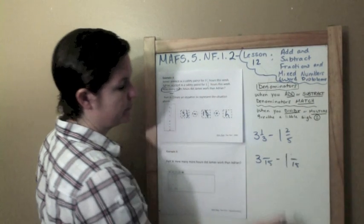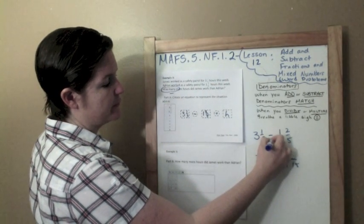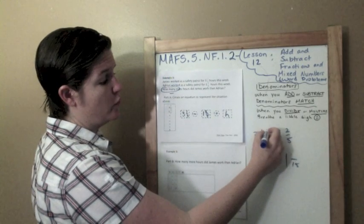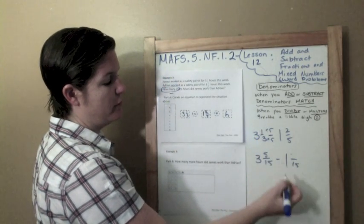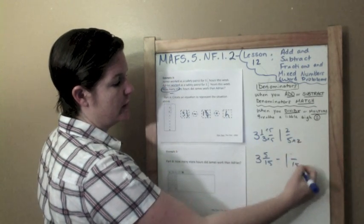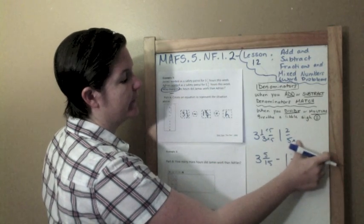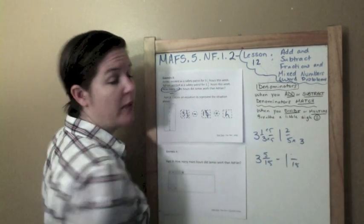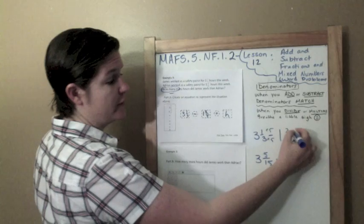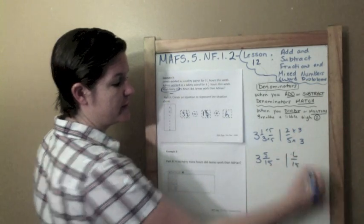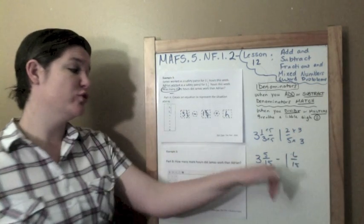Let me write it over here. 3 and 1/3 minus 1 and 2/5. Do my denominators match? Nope. But I need to make them match. So, 3 and 5, they share a common denominator of 15. 3 times 5 gets me my 15, 1 times 5 gets me 5. And 5 times 3 equals 15, so 2 times 3 equals 6. And now I need to subtract.